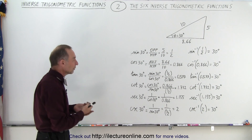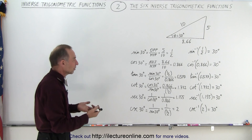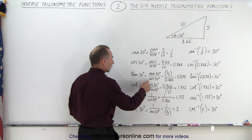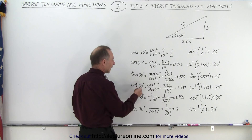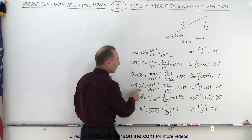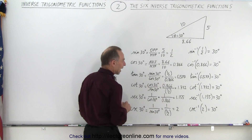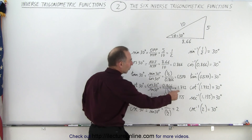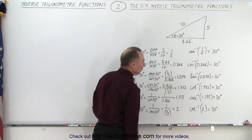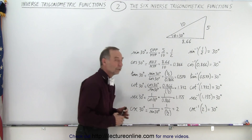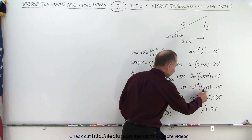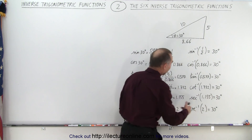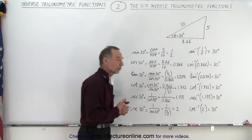The cotangent of an angle by definition is equal to the ratio of the cosine divided by the sine. In the case of an angle of 30 degrees, that is equal to 0.866 divided by one half, or 1.732. So if we take the inverse cotangent of 1.732, we get back the angle of 30 degrees.